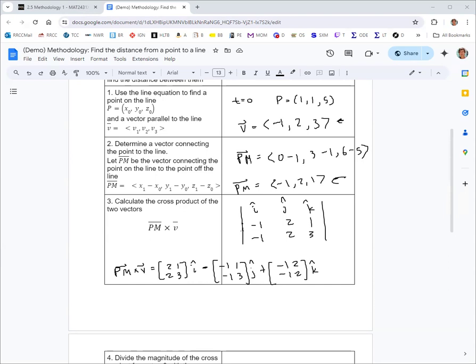Then we do the 2 by 2 determinants, multiplying from the top left to the bottom right, and multiplying from the top right to the bottom left, and subtracting those. So it'd be 2 times 3, which is 6, minus 2 times 1, which is 2. With the middle one, -1 times 3 is -3, minus -1 times 1 is -1.